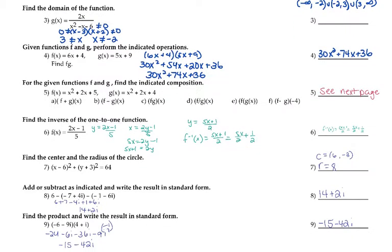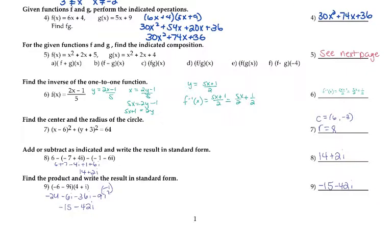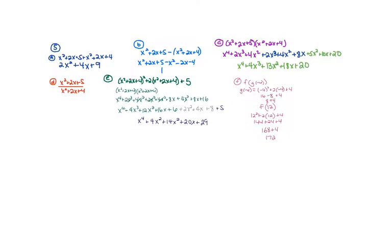Number 4 is your functions, and it says f times g, so you're going to multiply those out: 30x squared plus 74x plus 36. Number 5 is broken down into parts. A is just adding the 2 but keeping x as x. B is subtracting, C is multiplying, D is dividing, E is plugging g into f, and F is taking negative 4, plugging it into g, and then plugging that into f.